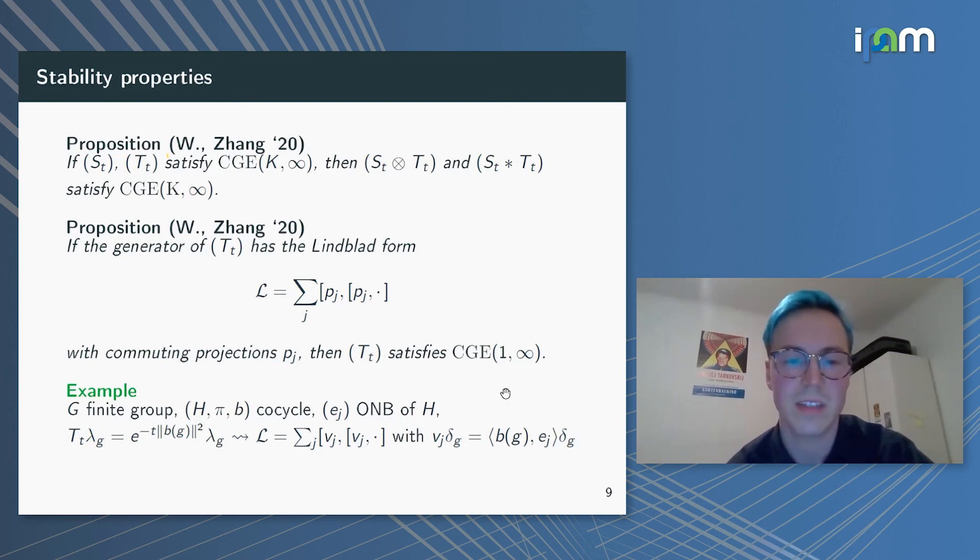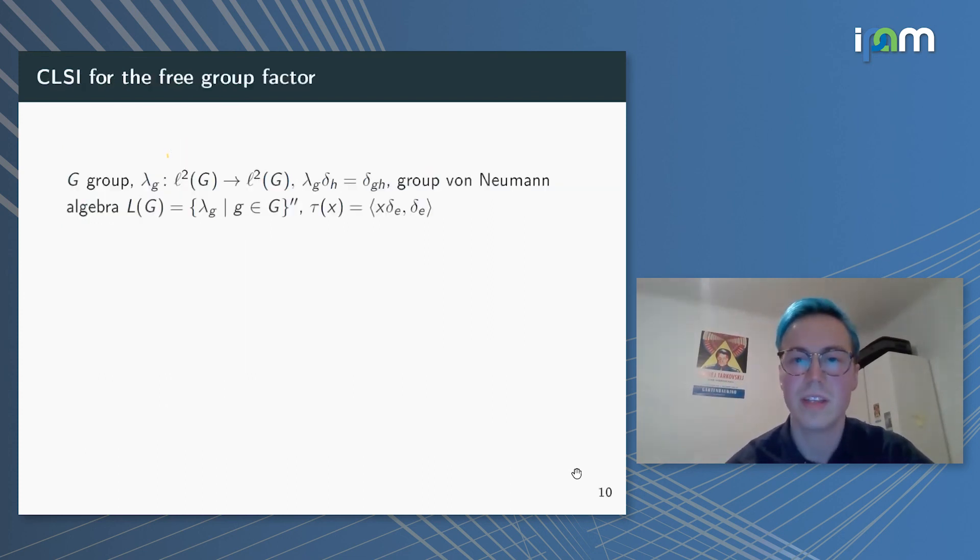Let me also give you an example of that. If I have a finite group, then it's a known result that all translation-invariant semigroups are of this form: just multiplication of λ_g by e^{−‖b(g)‖²}, where b(g) is a cocycle. And then there's an explicit Lindblad form; of course, these V_j are commuting operators. They may or may not be projections, but for the example on the very last slide they are. So let me go through this quickly: just a reminder on the group von Neumann algebra in our very specific case.